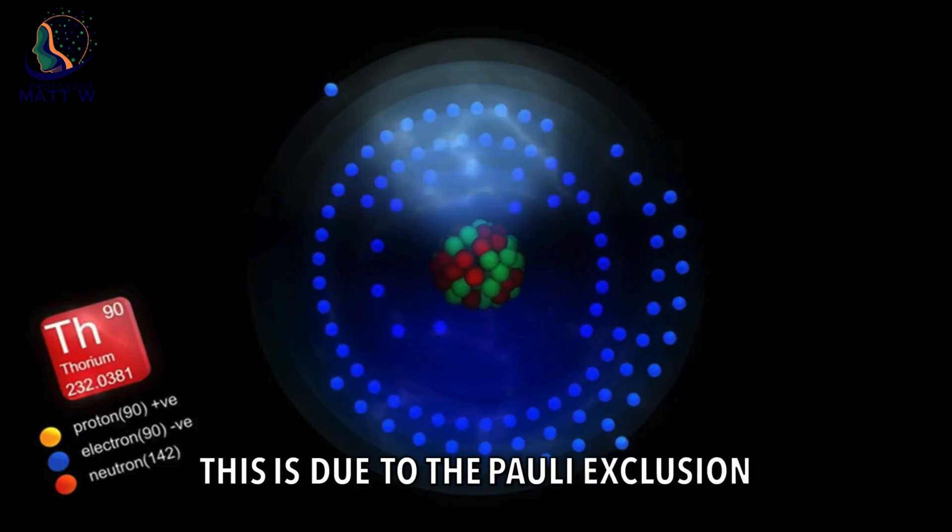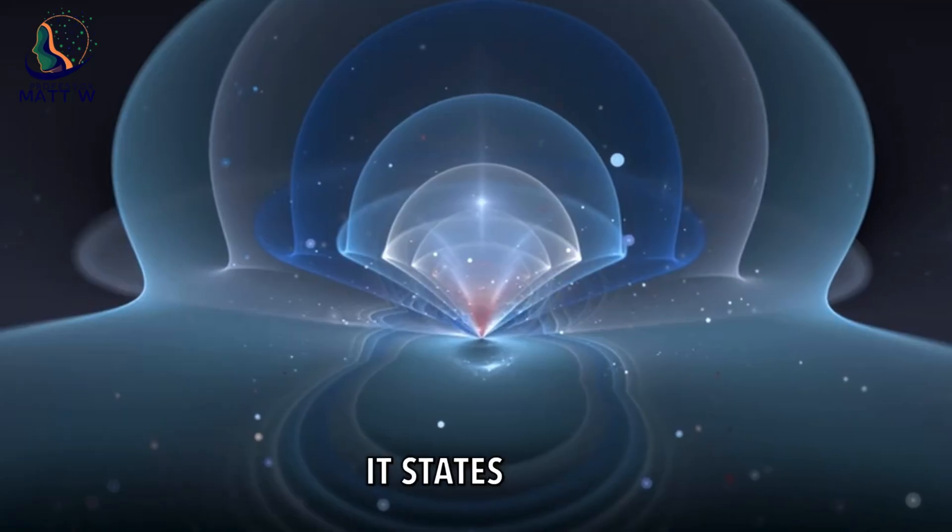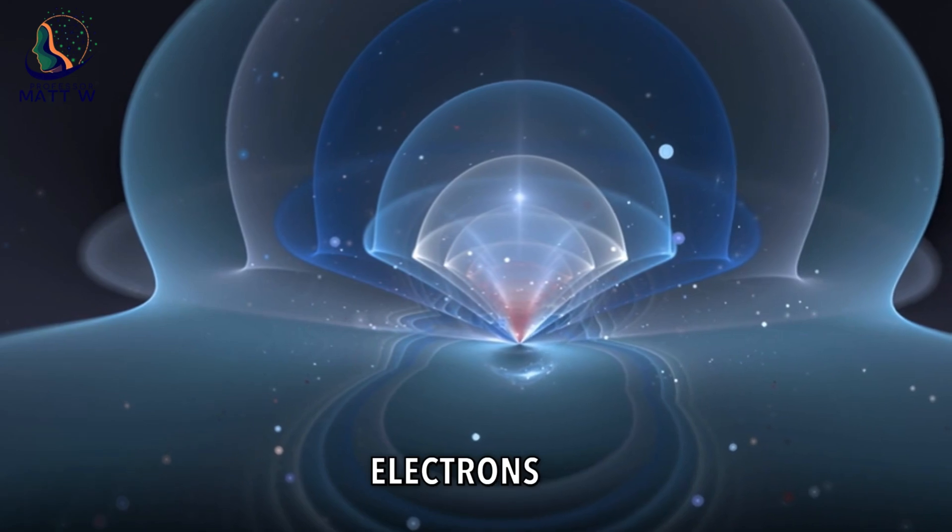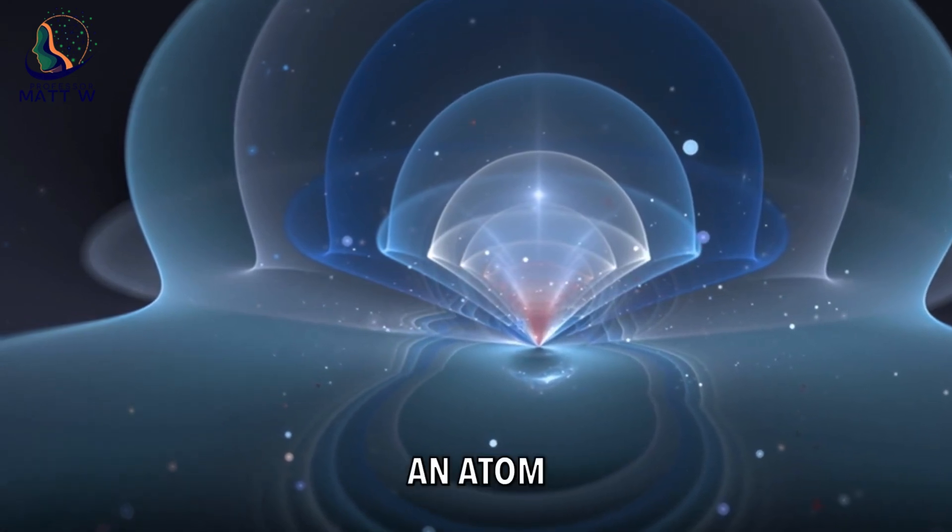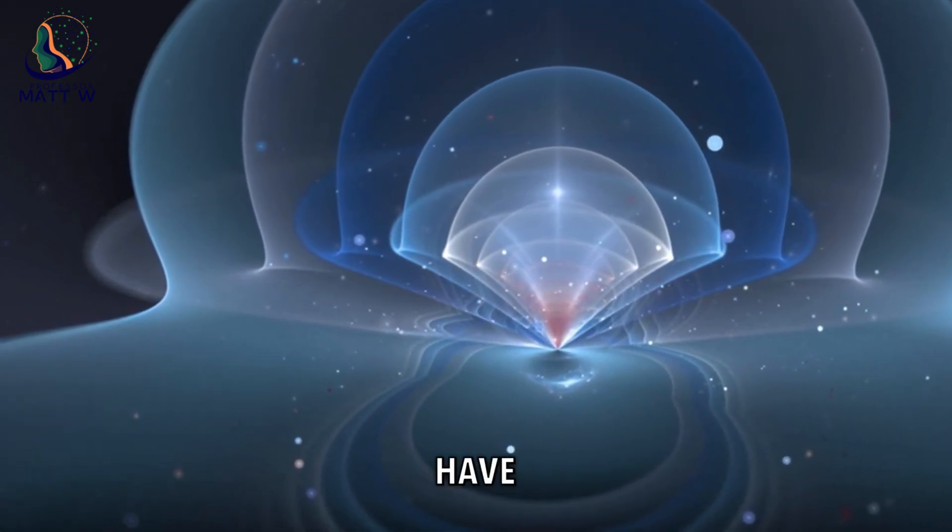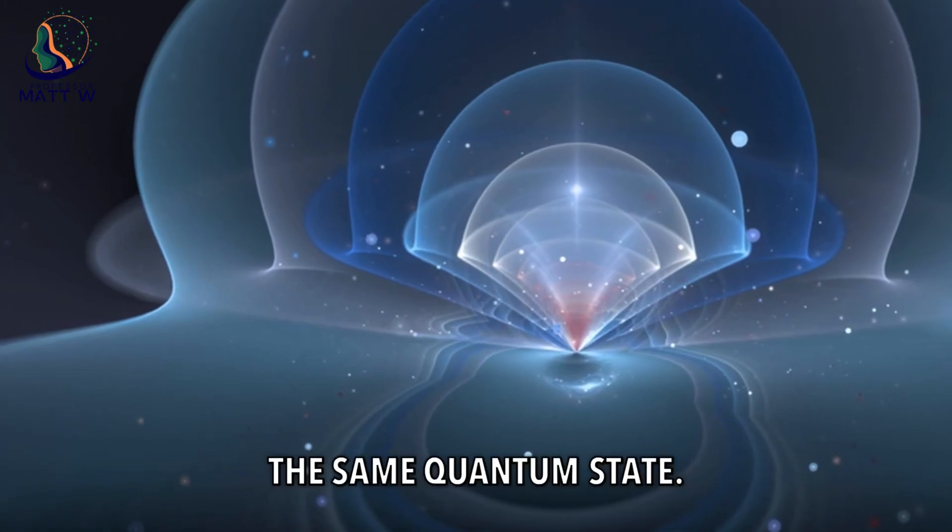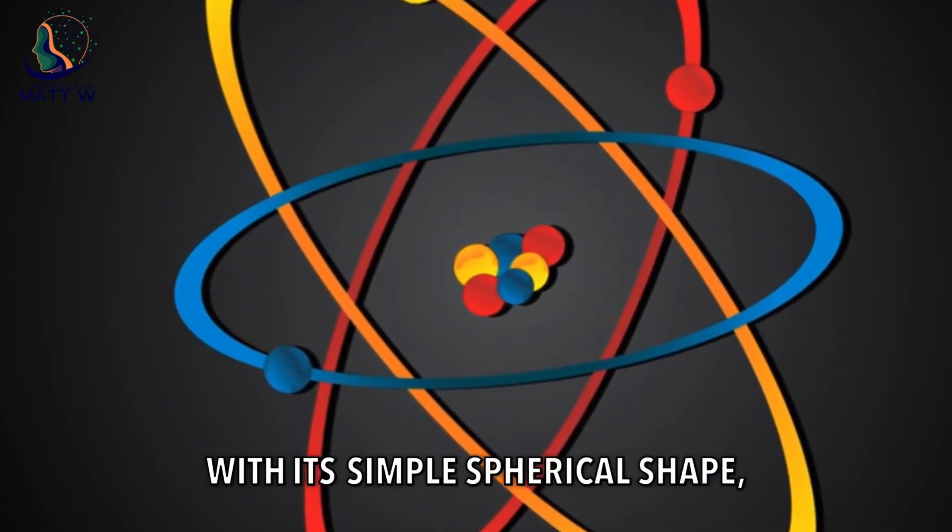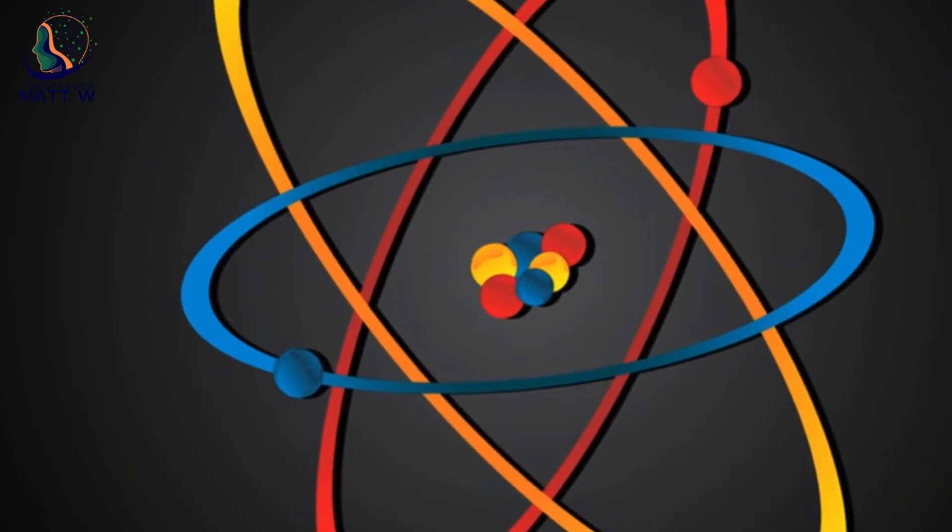This is due to the Pauli exclusion principle. It states that no two electrons in an atom can have the same quantum state. The s orbital, with its simple spherical shape, represents the most basic building block of the periodic table.